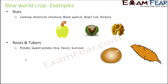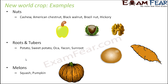So all of these fruits, nuts, and roots were grown only in the Americas before 1492. Some melons like squash and pumpkin also fall under the category of new world crops.